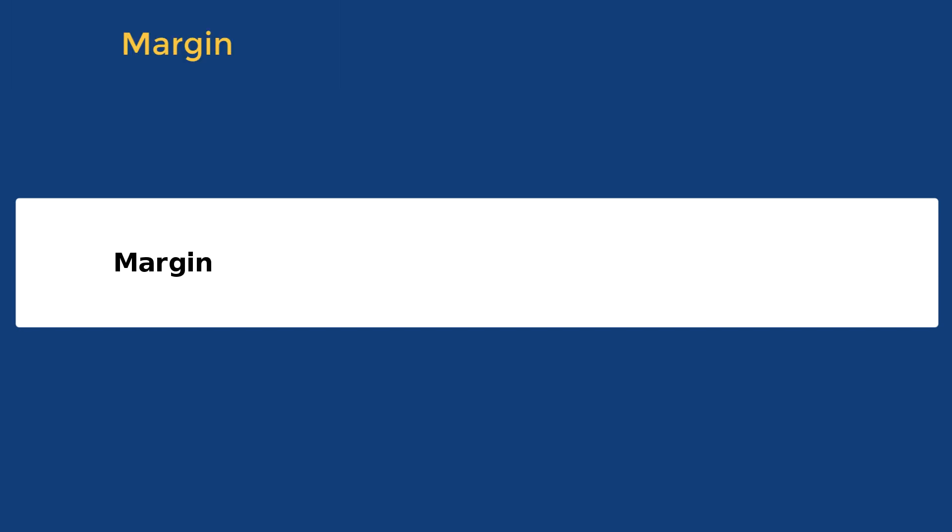The margin refers to the outer edge of the colony. If the margin is smooth, we call it entire. If it is wavy, we call it undulate.